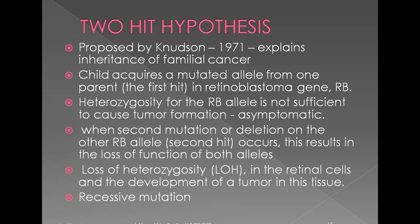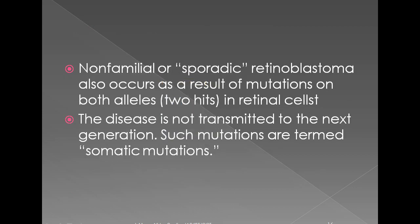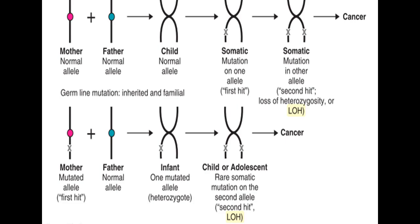The cell has a mutation but it is not sufficient enough for the development of the tumor. When there is a second mutation developing in the other allele which was earlier normal, that results in the loss of function in both the alleles. This loss of heterozygosity plays a very vital role in the development of tumor, along with the loss of function mutation.